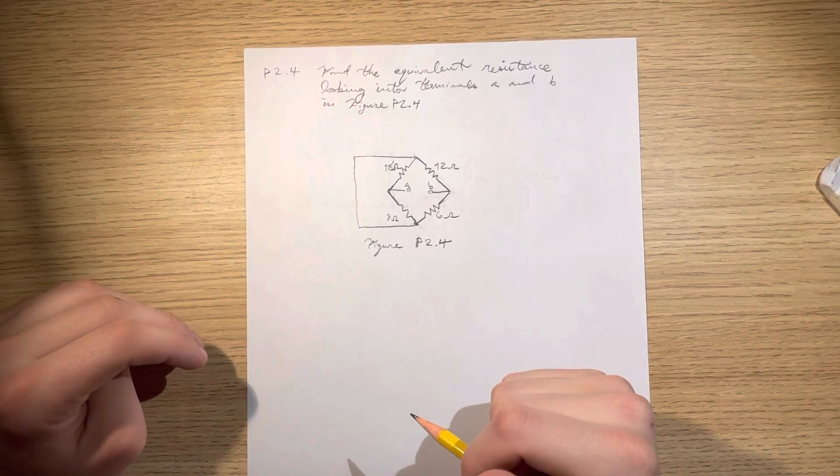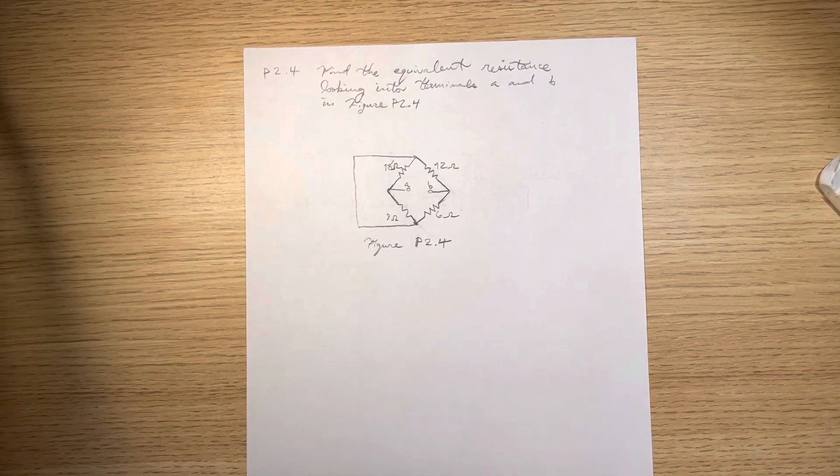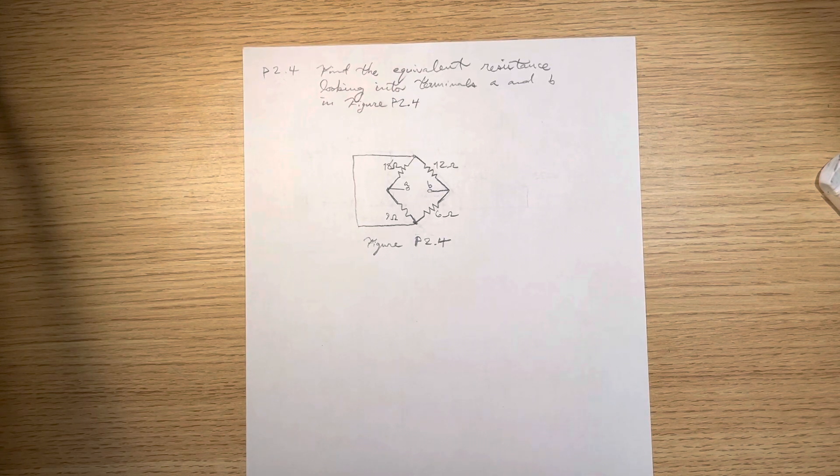Problem 2.4, find equivalent resistance looking into terminals A and B in figure P 2.4.